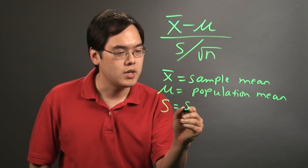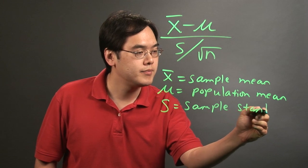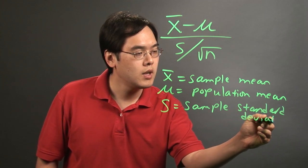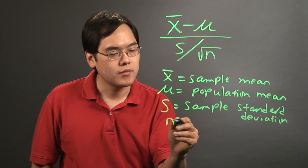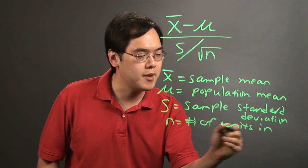Now s is the sample standard deviation, and then n is the number of units in that sample.